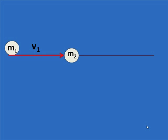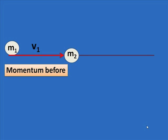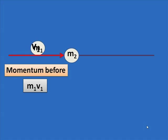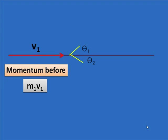The momentum before is very easy to find — it's simply m1 times v1, because m2 is at rest. They hit and move off at angles; each has a different angle, theta1 and theta2. Each has its own unique momentum, p1 and p2.